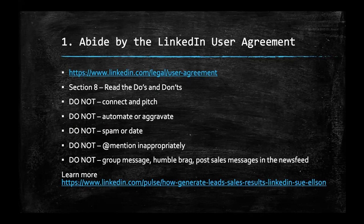Don't at-mention inappropriately — sometimes people put lots of at-mentions with influencers hoping they'll share content further. That's not appropriate. Group messaging doesn't work either because everybody gets a copy of the message. Humble bragging doesn't go down well. Sales messages like 'come and fund our school or college or university' are not a good idea. But if you want to go down the sales path, follow that link for more tips.